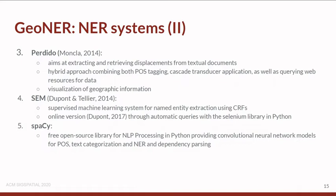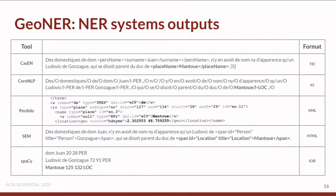Sem is a supervised machine learning system based on conditional random fields. We use an online version through automatic queries with the Selenium library in Python. Finally, Spacy is an NLP library in Python providing convolutional neural network models for part-of-speech tagging, text categorization, named entity recognition, and dependency parsing.